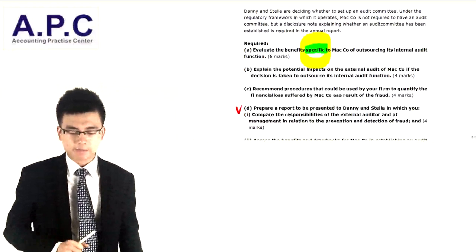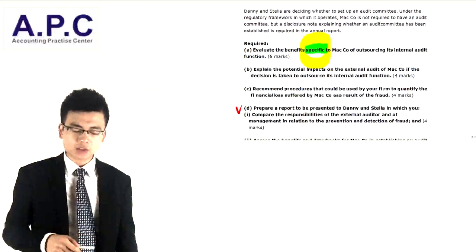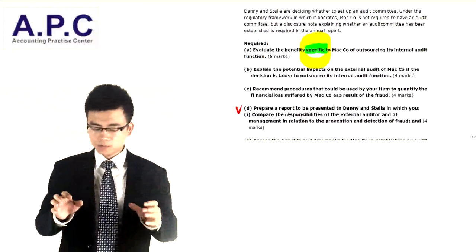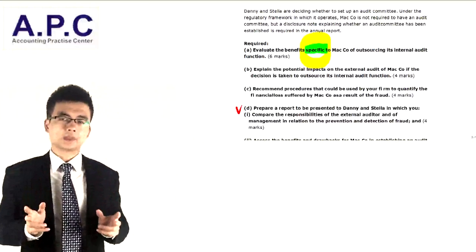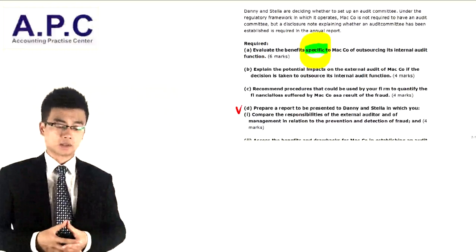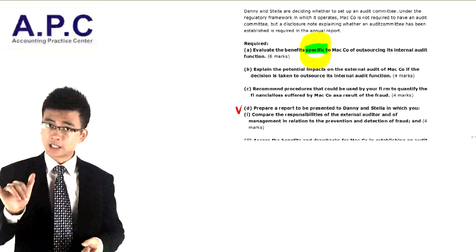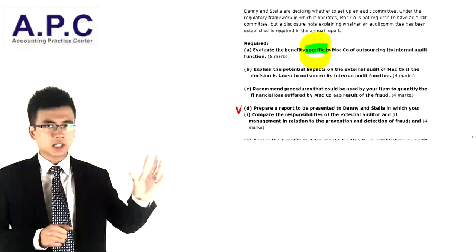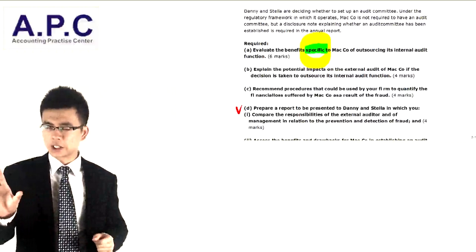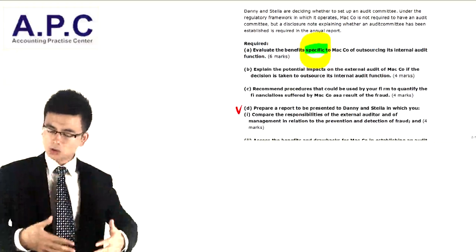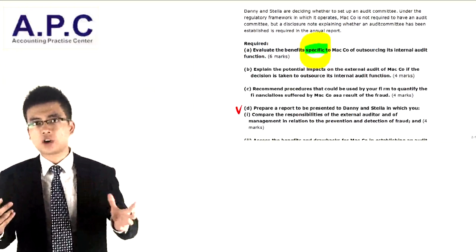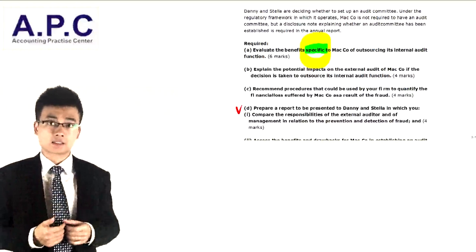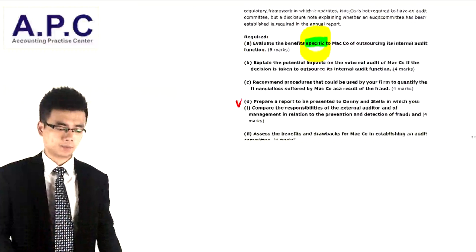For Part B, explain the impact on the external audit of Matcos if the decision is taken to outsource its internal audit function. The external auditor's aim is to express their audit opinion on the true and fairness of the financial statements. One stage involves assessing the client's internal control systems. If the internal audit function is outsourced, the internal controls may improve, potentially reducing external auditor work and hence reducing the audit fee. It's four marks, so we need four points.